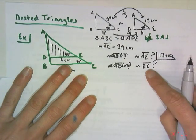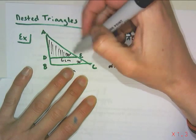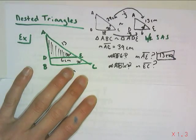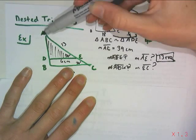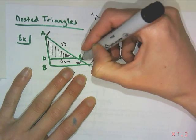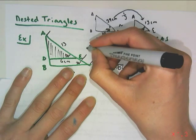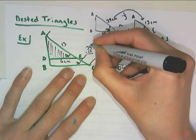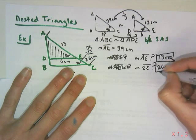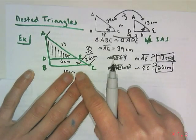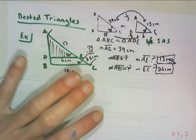And to figure out EC, if I go back to my original drawing, I can now conclude that side AE is 13, and we knew that the entire measure of AC was 39. So how do we figure out just the distance from E to C? Well, that would be 39 minus 13. So that would give us 26 centimeters. So the first thing you want to do with nested triangles is to un-nest them and label everything that you know. That's angles or sides.